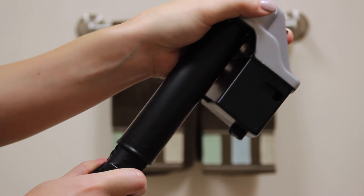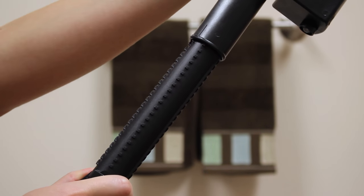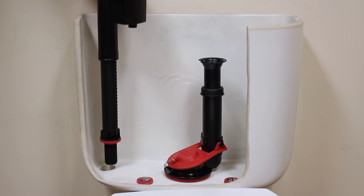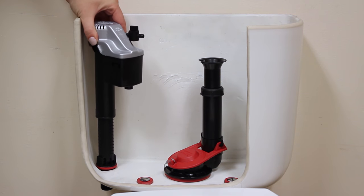Now turn the top of your new fill valve counterclockwise and pull up to fully extend. Place the valve in the tank and press down on the fill valve until the corner of the silver cover lines up with the top of the flush valve.